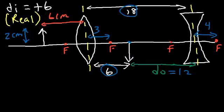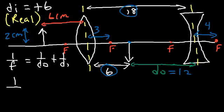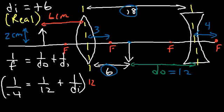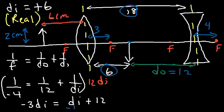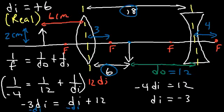Now let's calculate di for the second lens using the same equation: 1/f = 1/dO + 1/di. For the divergent lens, f is negative, so f equals negative 4. dO is positive 12. Multiplying both sides by 12·di to clear fractions: 12·di times negative 1/4 equals negative 3·di; 1/12 times 12·di gives di; and 1/di times 12·di gives 12. Subtracting di from both sides, negative 4·di equals 12, so di equals negative 3.